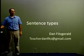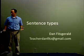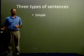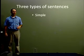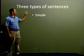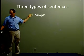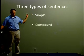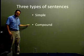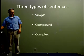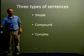Hello, today we are going to talk about sentence types, the different types of sentences we have in English. In English, we have three types of sentences: the first type is the simple sentence, the compound sentence, and finally the complex sentence.